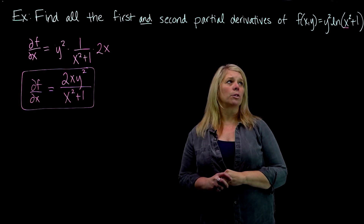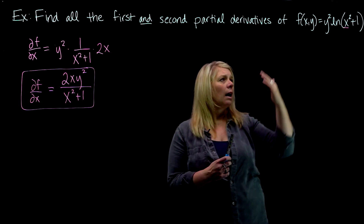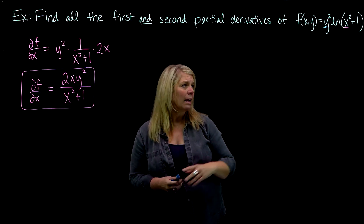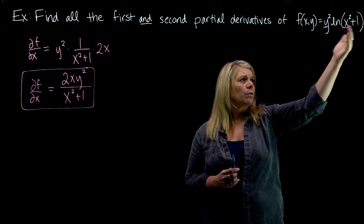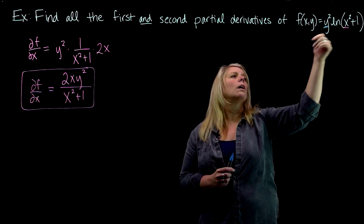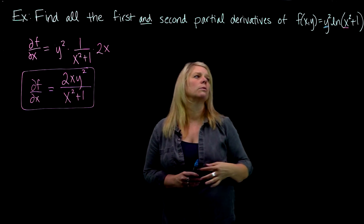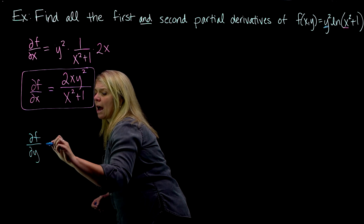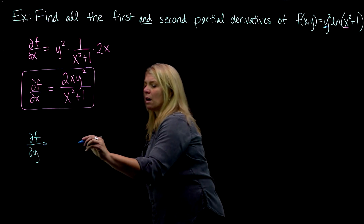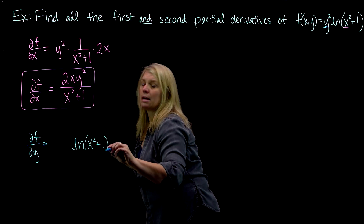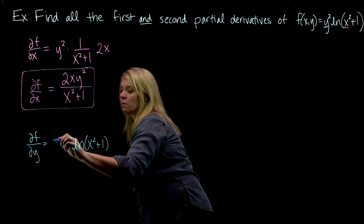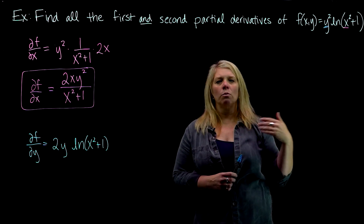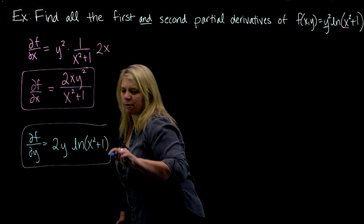I also have a first partial derivative with respect to y. There's only one y in this problem, so when I find the partial derivative with respect to y, everything else is treated as a constant. Because x is held constant, x²+1 is held constant, and ln(x²+1) is a big constant out front. So the partial derivative of f with respect to y is that constant times the derivative of y² with respect to y, which is 2y. It's almost like finding the derivative of 6y² with respect to y.